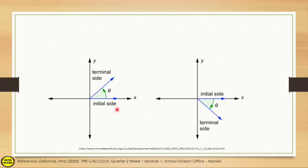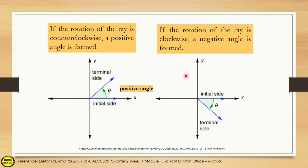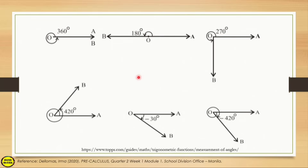The direction of rotation of a ray also affects angle measure. As you can see, when the rotation of the ray is counterclockwise, the angle formed is positive. But when the rotation is clockwise, the angle obtained is negative. So again, counterclockwise rotation gives a positive angle, and clockwise rotation gives a negative angle.